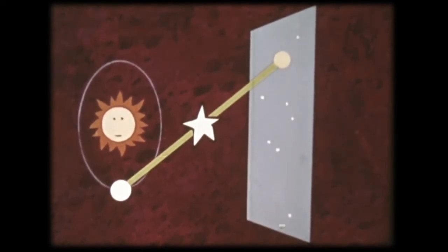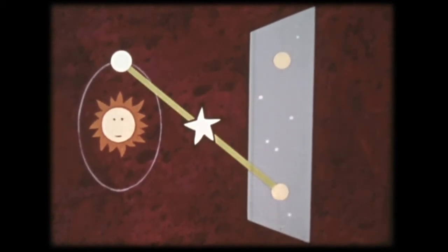Suppose we are observing this star. We wish to know how far away it is. In October, the star appears to be here on the background of very distant stars. Six months later in April, the Earth has traveled to the other side of its orbit. Now, the star appears to be here. The difference between the direction to the place where the star seems to be now and the direction to the place where it seemed to be in October can be measured as an angle.